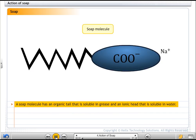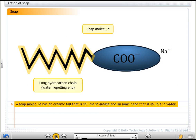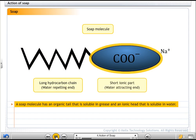A soap molecule has a long chain organic part and the functional group COO-Na+. The organic part is insoluble in water but is soluble in organic solvents or in oil or grease. The ionic part is soluble in water.